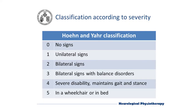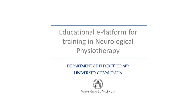Once we have assessed all of these signs we can determine the severity of the disease through the Hoehn and Yahr scale. Thank you for using this educational e-platform.